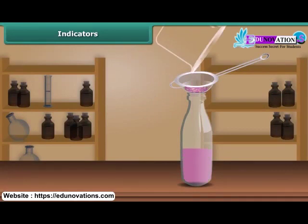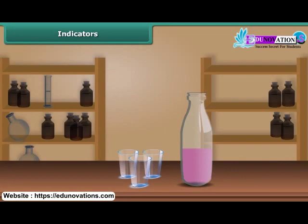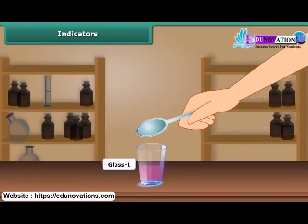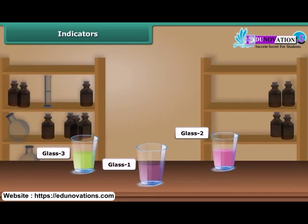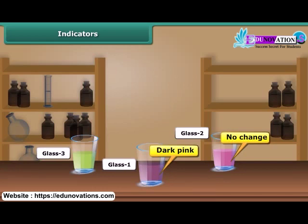This purple-red solution is your indicator. Take a small amount of this indicator in three small glasses. Pour lemon juice in the first glass, water in the second glass, and soap solution in the third glass. In glass one, the color changes to dark pink — lemon juice is acidic in nature. There is no color change in glass two because water is neutral in nature. The color in the third glass changes to green. We can conclude that the China rose indicator turns bright pink in the presence of an acid and green in the presence of a base.